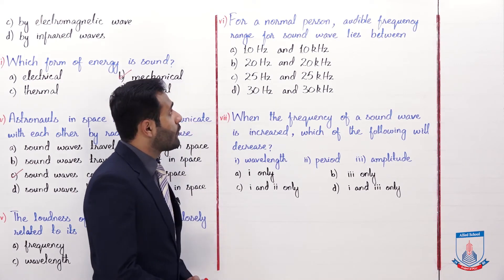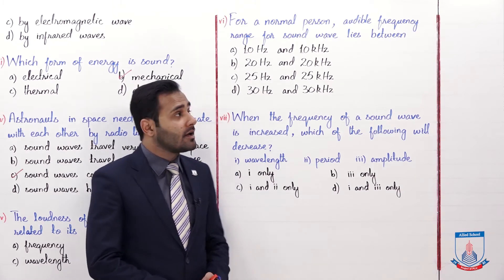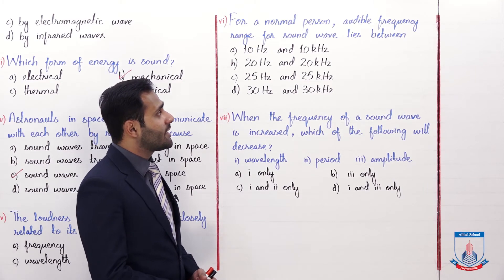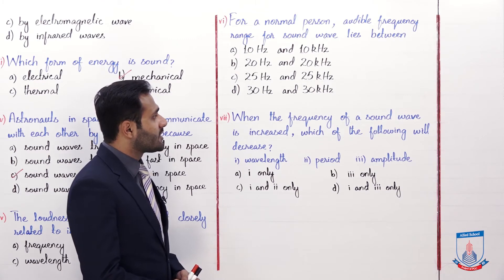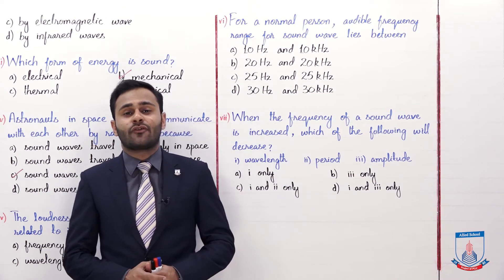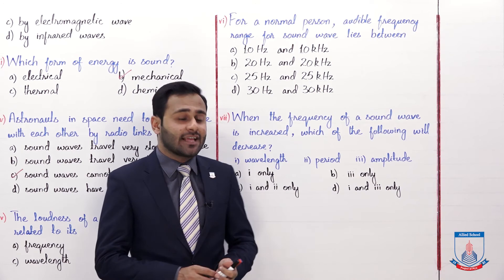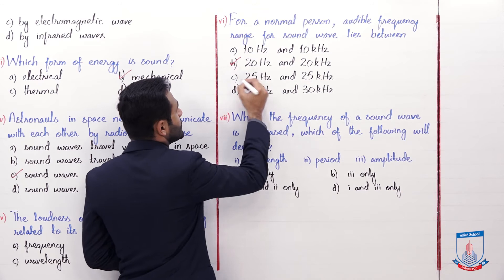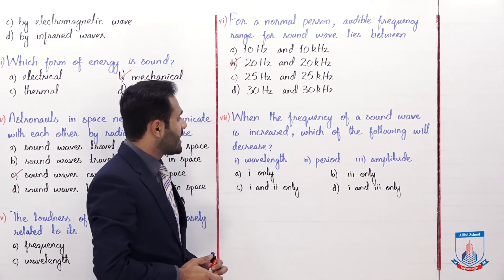MCQ number seven, for a normal person audible frequency range for sound wave lies between A 10 Hz and 10 kHz, B 20 Hz and 20 kHz, C 25 Hz and 25 kHz and D 30 Hz and 30 kHz. So for a normal person the audible frequency range lies between 20 Hz to 20 kHz. So the option B is correct which is 20 Hz to 20 kHz.